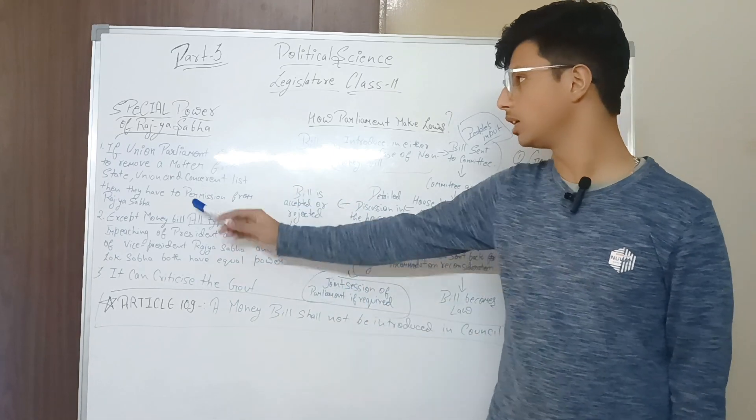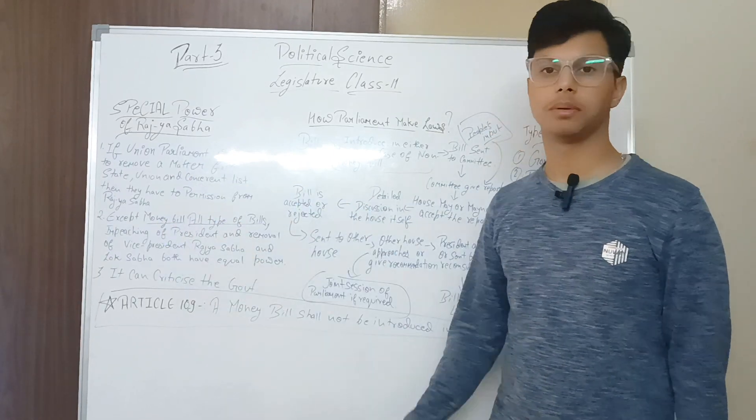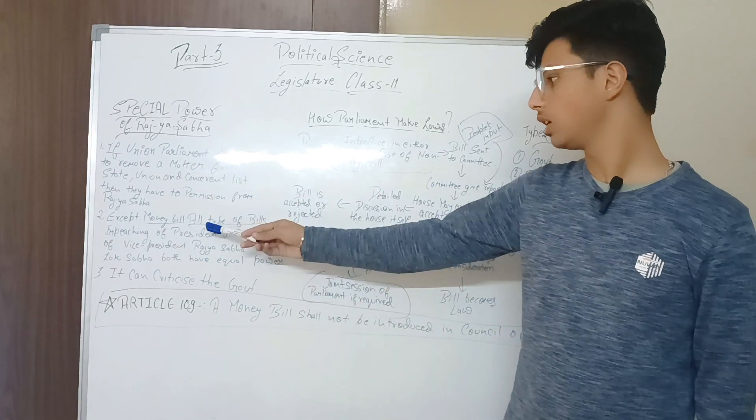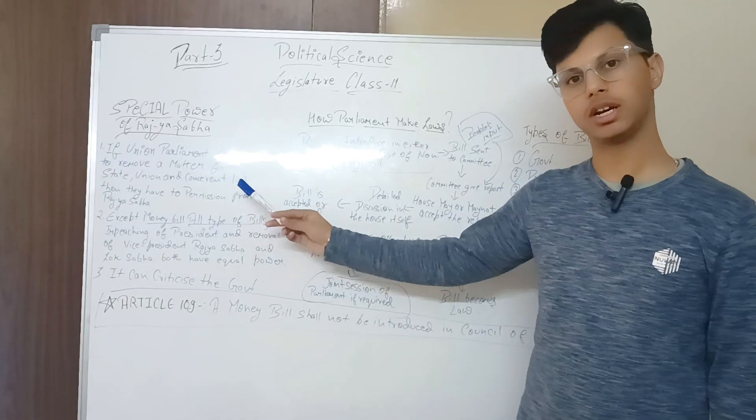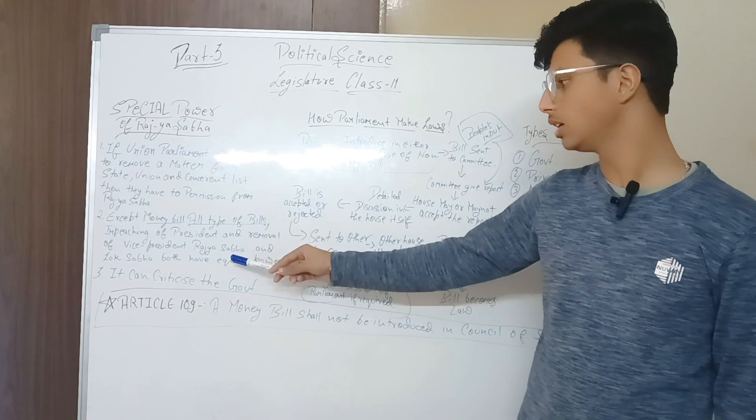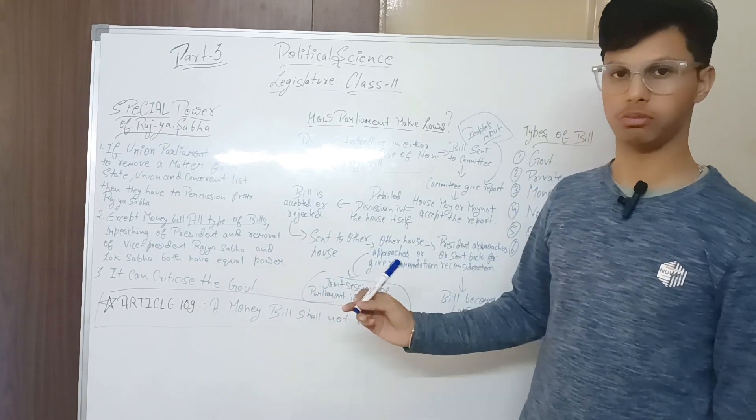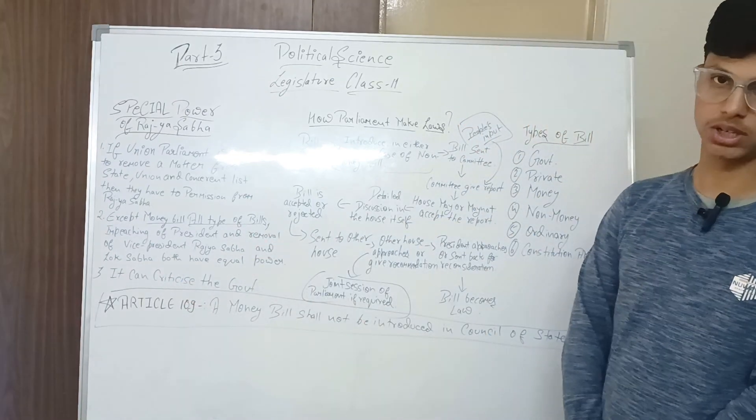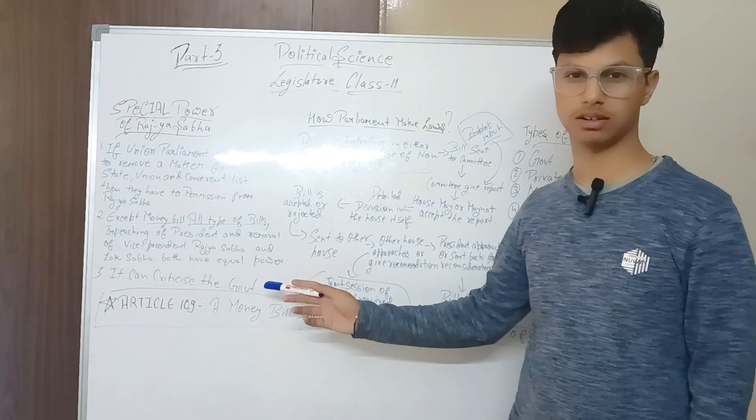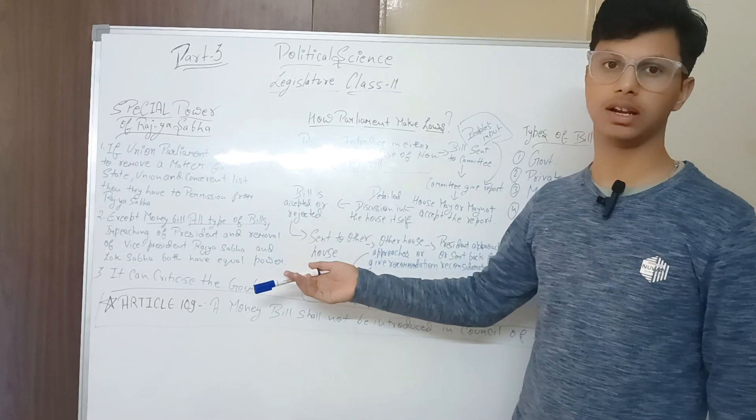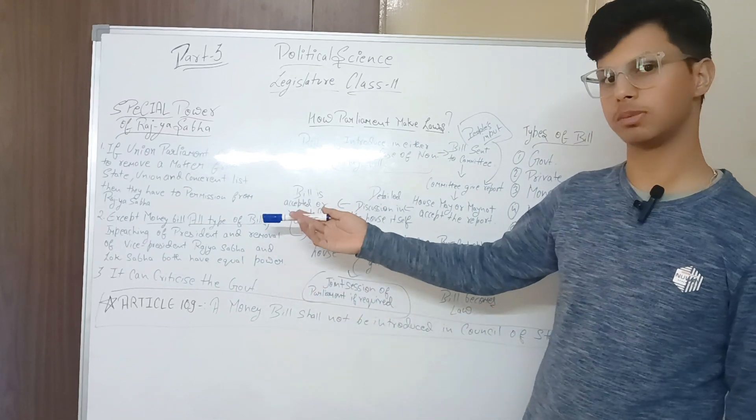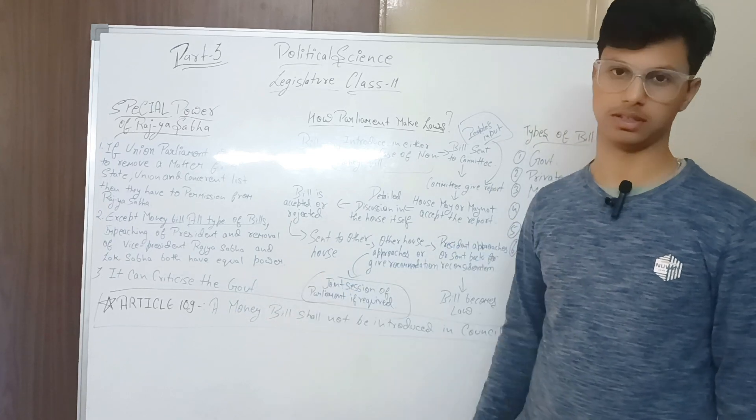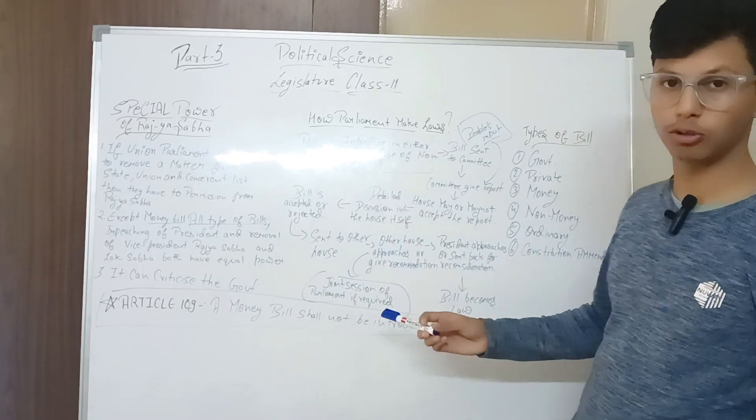Second, except money bills, all types of bills for impeachment of president or removal of vice president, Rajya Sabha and Lok Sabha both have same representation and same power. Rajya Sabha cannot remove the government but it can criticize the government. Main power is given to Lok Sabha, but Rajya Sabha has the power to criticize so that they work better.